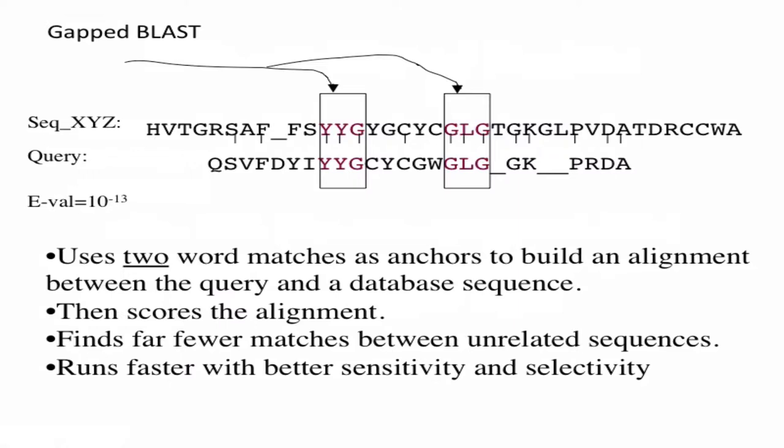Most of the time, the gap parameter isn't the first thing you'd change. What you'd most likely want to adjust is the scoring matrix — for example, using a BLOSUM matrix more tolerant of amino acid differences if you're looking for distant homology. Changing the gap parameter is more fundamental and hard to predict; it hasn't been empirically validated under every set of circumstances, so don't do it without a strong reason.